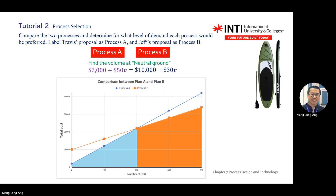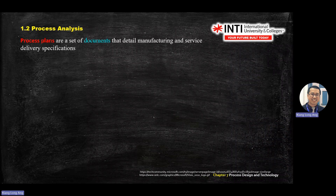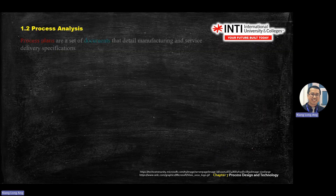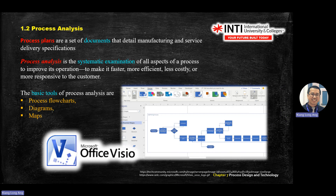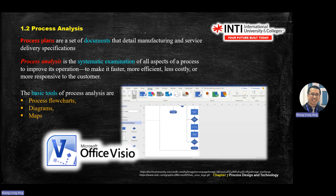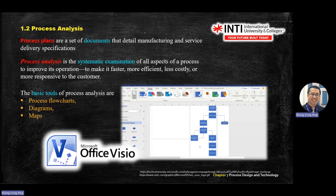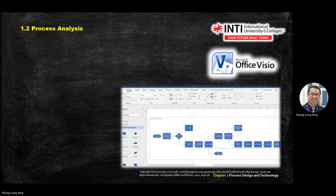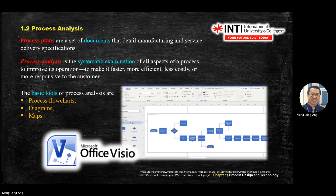This is a linear cost analysis — process selection. There are also software tools like Microsoft Visio for process flow maps. Process plans are documents; process analysis is the examination of the steps of a process. It involves building a flow chart to document and analyze every step.